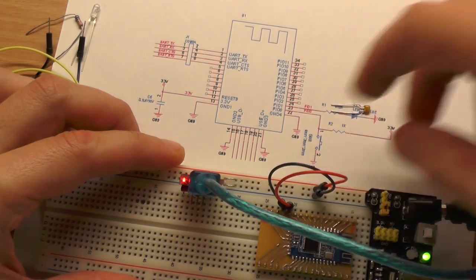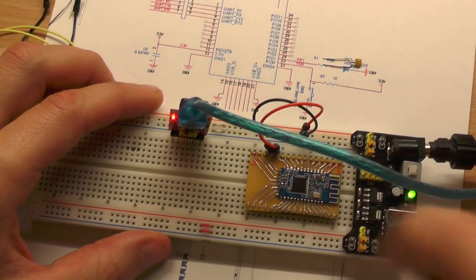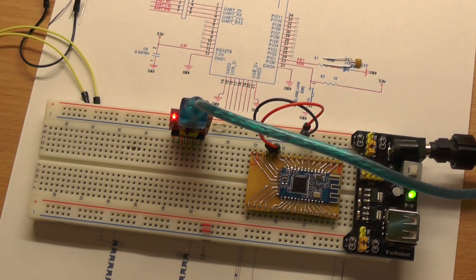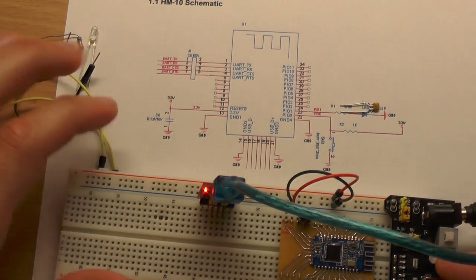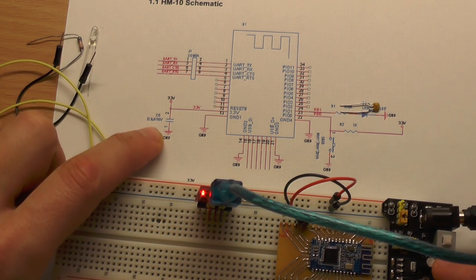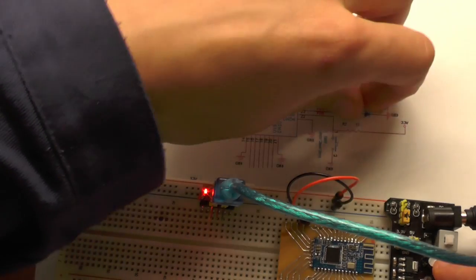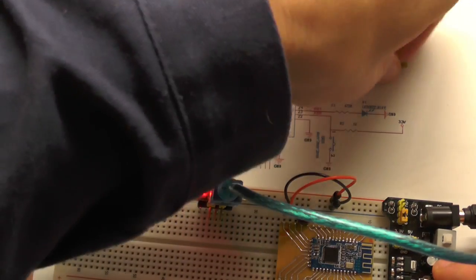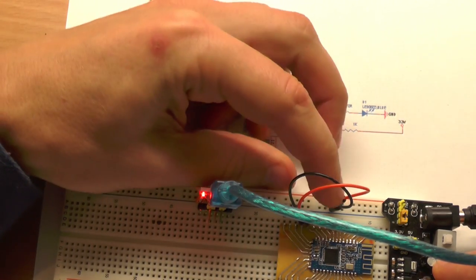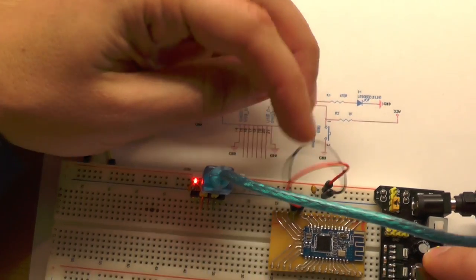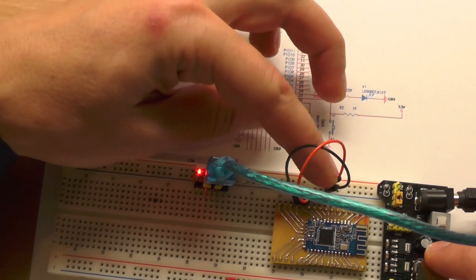Now it's already running but we can't see anything. What's also here on the data sheet is that we should decouple it with 100 nanofarad cap. I have one here, we just place it here directly to these connections but it doesn't really matter, it's even too far away since the wires are quite long.